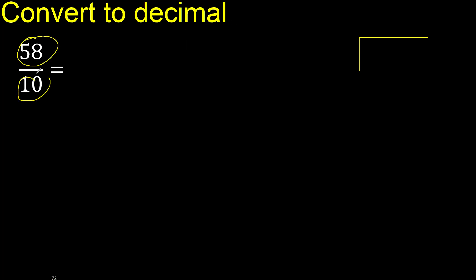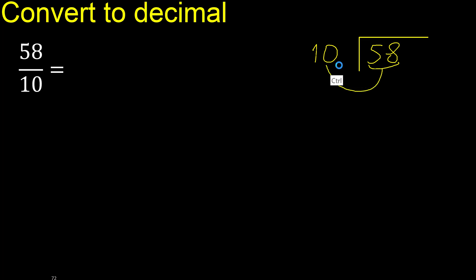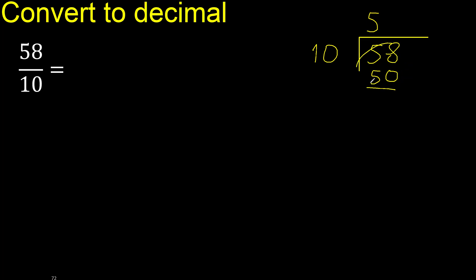58 divided by 10. 58 is not less, therefore 10 multiplied by which number is nearest to 58 but not greater. 10 multiplied by 6 is 60 — 60 is greater. Multiplied by 5 is 50, which is not greater. Subtract: 8.